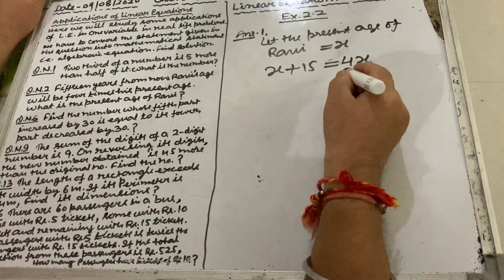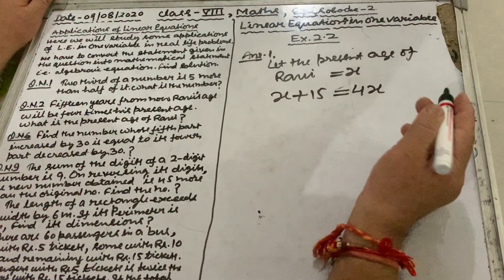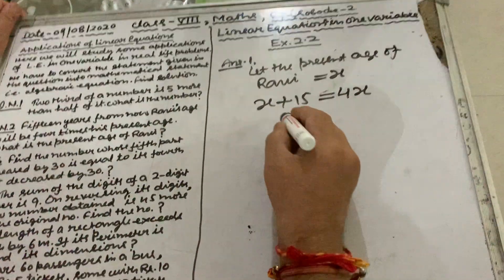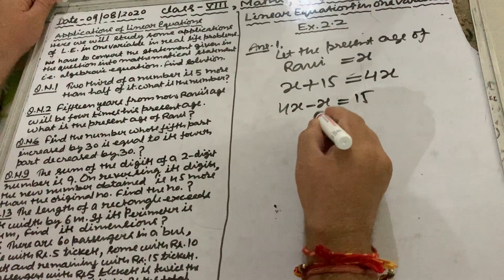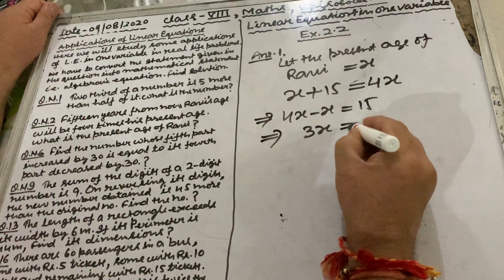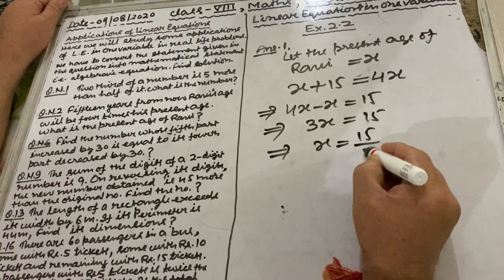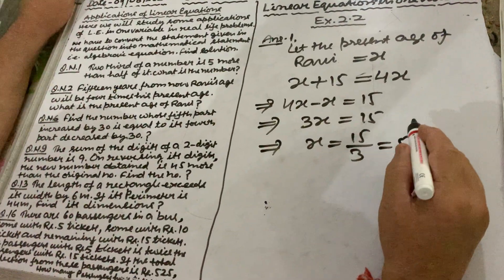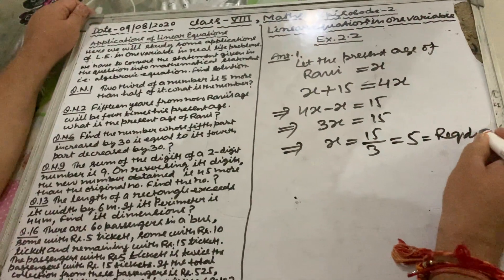On transposing, we bring the variable terms to the same side: 4x minus x equals 15, which gives 3x equals 15, so x equals 15 divided by 3, that is 5. So the present age of Ravi is 5 years. This is the required answer.